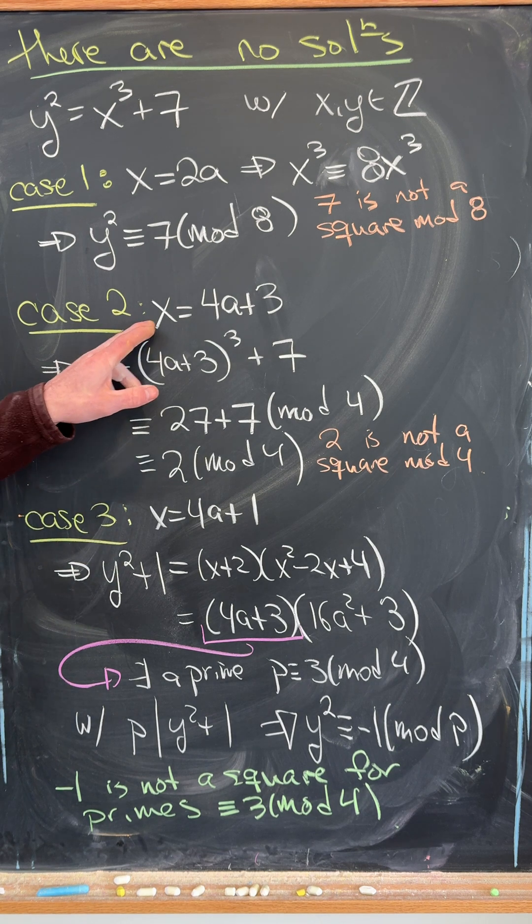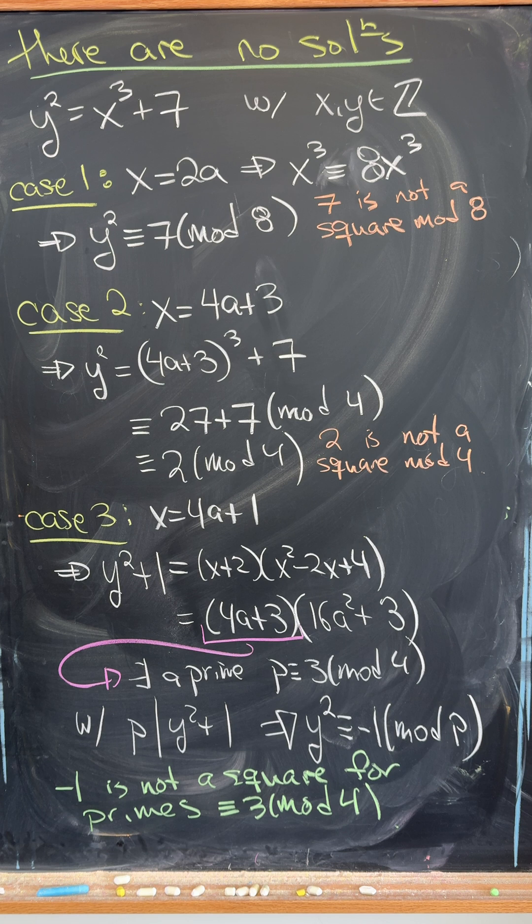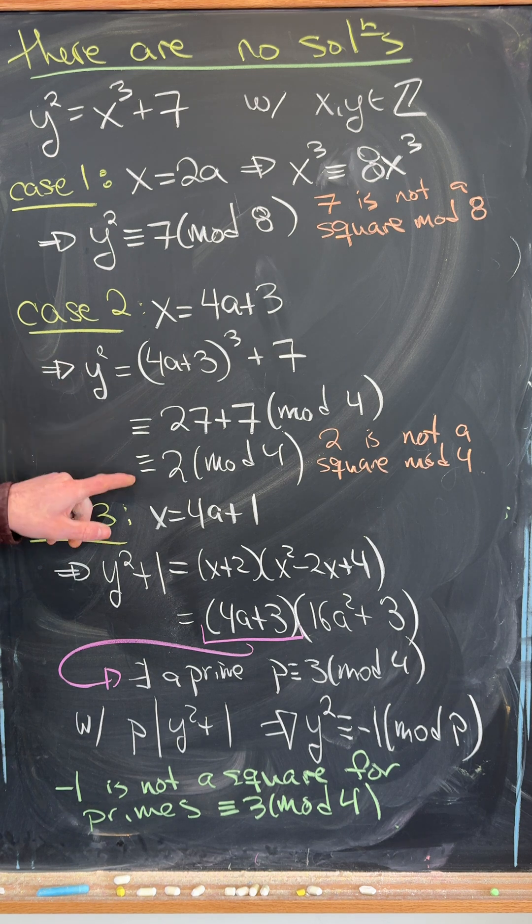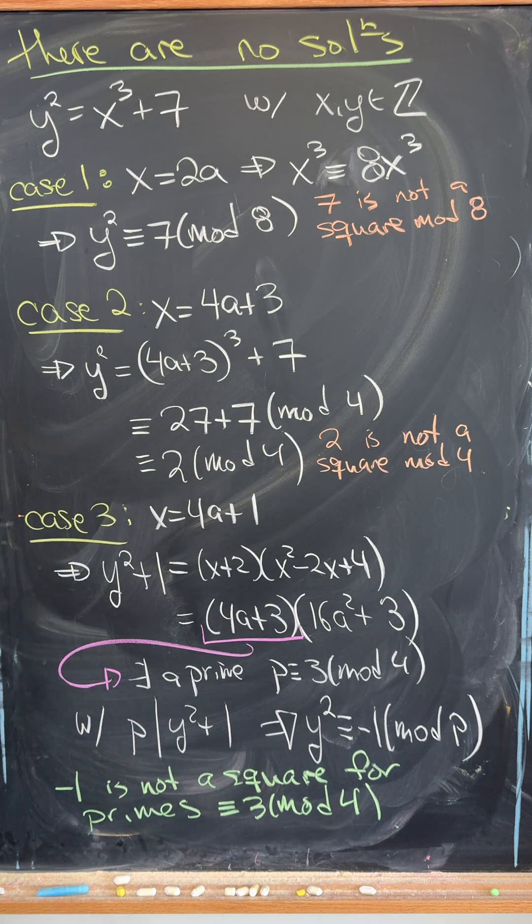Next, if x is odd and of the form 4a plus 3, you can simplify this down to y squared is congruent to 2 mod 4. But again, 2 is not a perfect square mod 4, so we don't have a solution here.